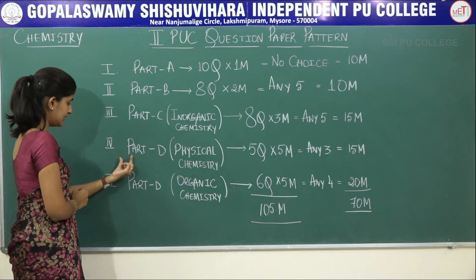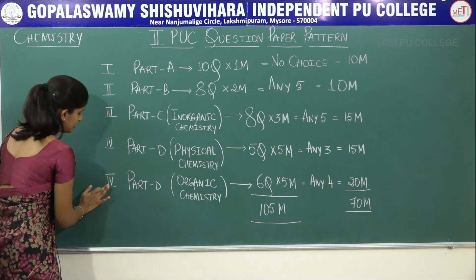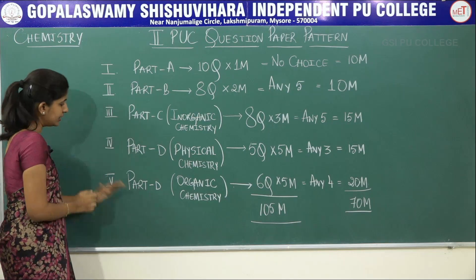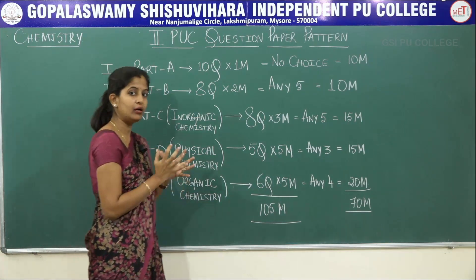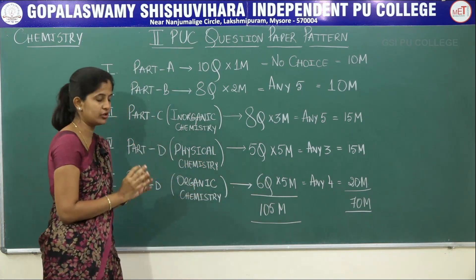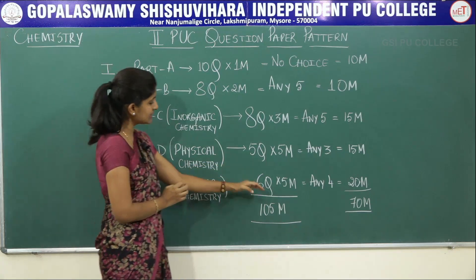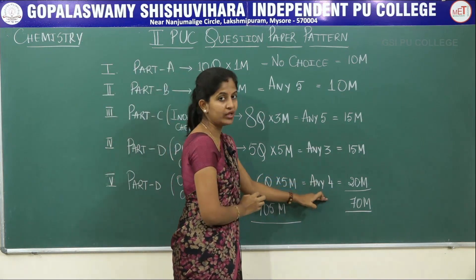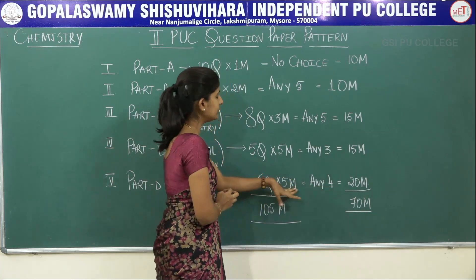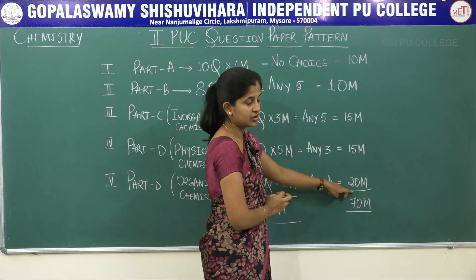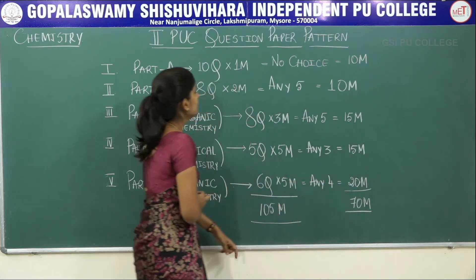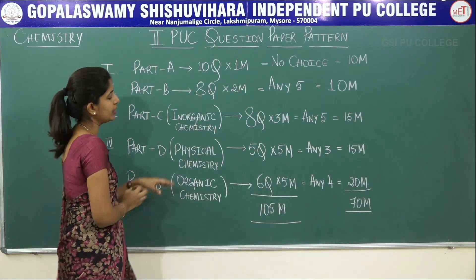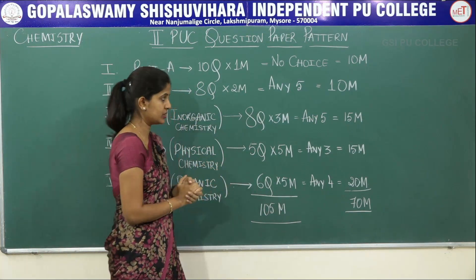The fifth main, also part of Part D, is only meant for organic chemistry questions. There are six questions of five marks each, and you have to attempt only four. Four questions into five marks gives 20 marks. So the fifth main is entirely dedicated to organic chemistry.